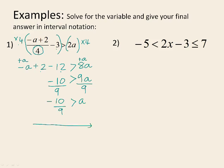On a number line, negative 10 over 9 represents all numbers that a can be — all numbers smaller than negative 10 over 9. Because it is strictly less than, we use an open circle above negative 10 over 9 and draw a line out to the left with an arrow. In interval notation, the smallest number is negative infinity and negative 10 over 9 is not included, so it gets a round bracket: negative infinity to negative 10 over 9 with round brackets.